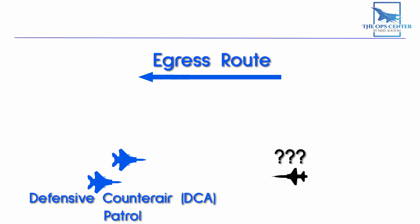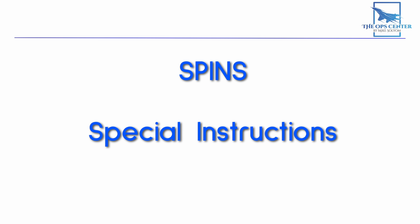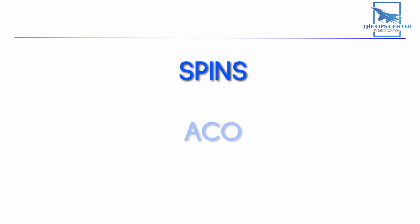The procedures used to conduct identification will be spelled out in the SPINS, or special instructions. Like the airspace control order, this also accompanies a daily air-tasking order. Even though all these instructions are spelled out in the SPINS and ACO, there's always a chance that not everything goes as planned.